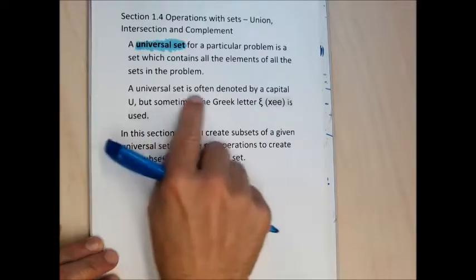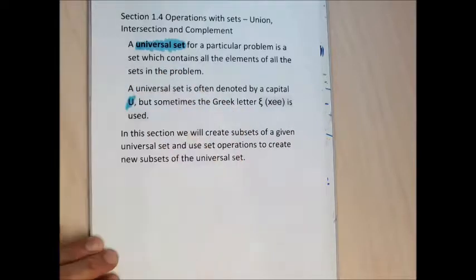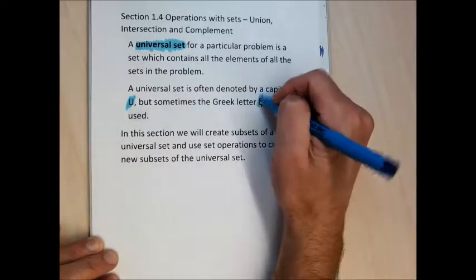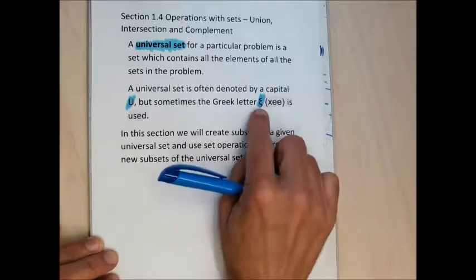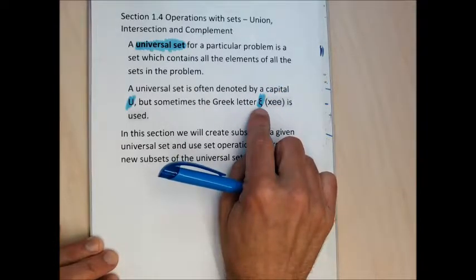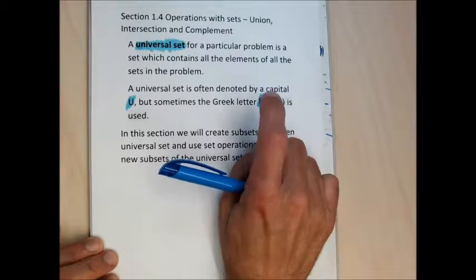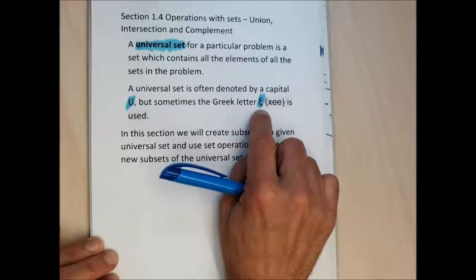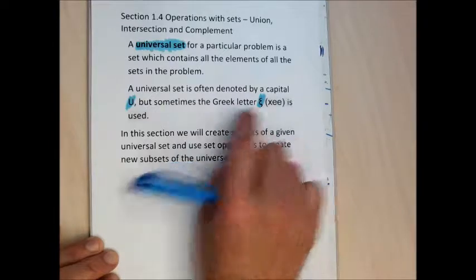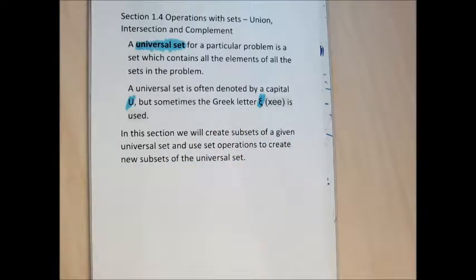A universal set is usually denoted by the capital letter U, but sometimes it's given by the Greek letter Xi. I would never use this letter, but we'll see some examples pulled off the internet that use it. Sometimes it's hard to create interesting sets by hand, so searching Google Images can find more interesting examples.